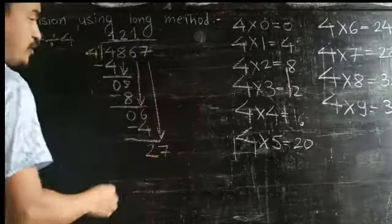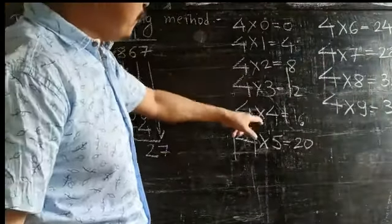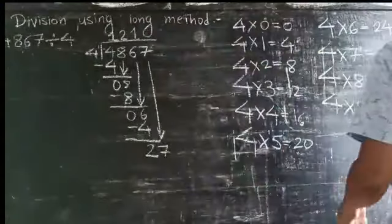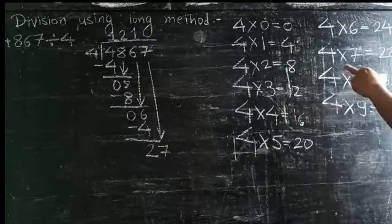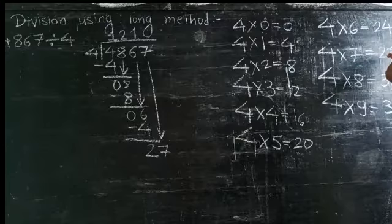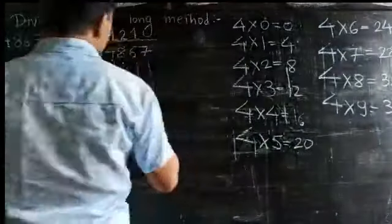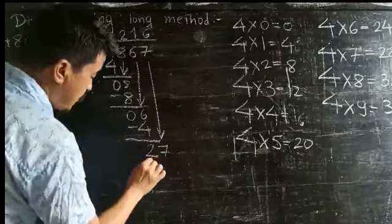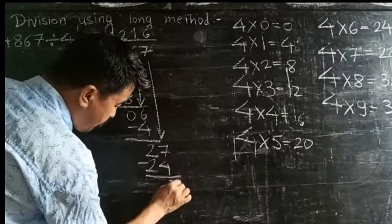Now 2 and 7 is 27. Look at the tables: 4×1=4, 4×3=12, 4×4=16, 4×5=20, 4×6=24, 4×7=28. So you take 4×6=24. 27 minus 24 equals 3, and 2 minus 2 equals 0. So this is the remainder.